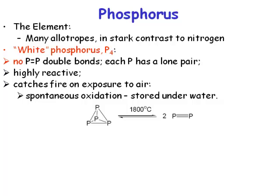Now phosphorus is much larger and you don't get efficient overlap between the p orbitals. So normally there is no phosphorus-phosphorus multiple bonding. There are of course multiple bonds to smaller atoms where orbital overlap is more efficient, but phosphorus does not normally form double bonds or triple bonds with itself.